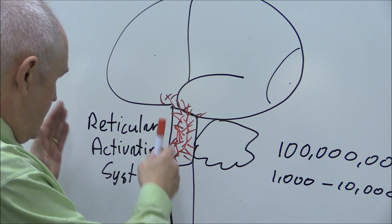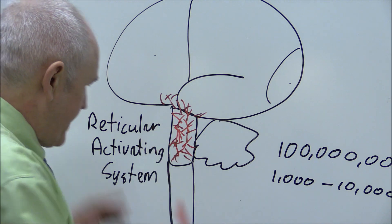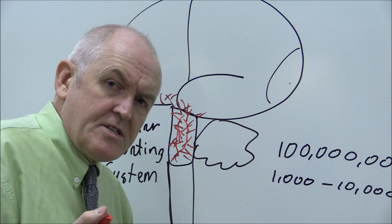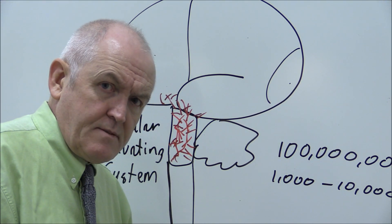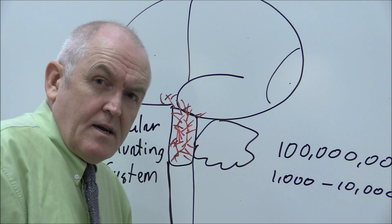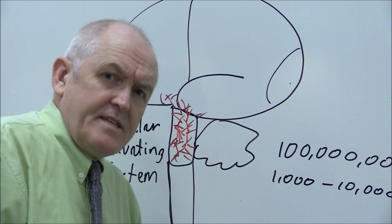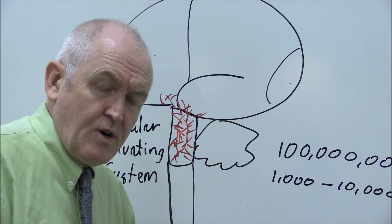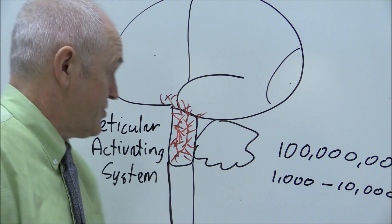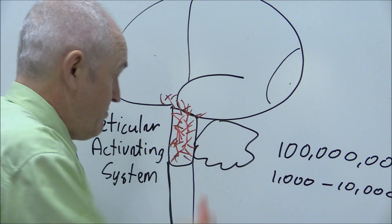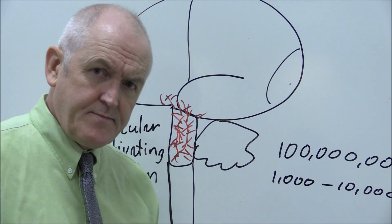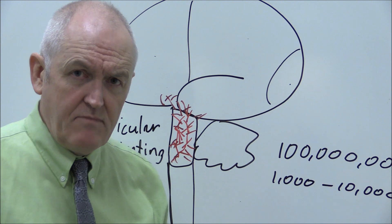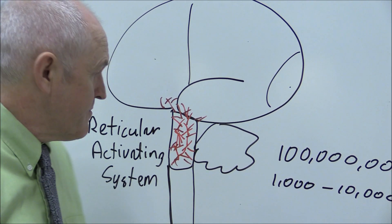This reticular activating system is what generates consciousness. So what differentiates you from a tree? The answer is your consciousness, generated by the reticular activating system. How it does that? No idea. But it does.